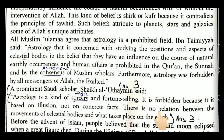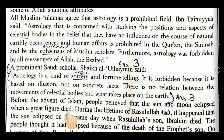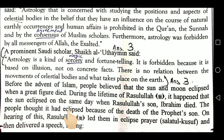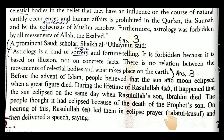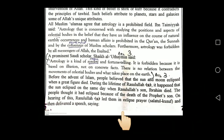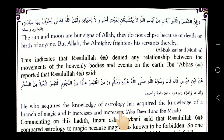There is no relation between the movements of celestial bodies and what takes place on the earth. Stars and heavenly bodies cannot do anything to anyone and are not responsible for any happening on the earth. Before the advent of Islam, Arabs believed that the sun and moon eclipsed when a great figure died. During the lifetime of the Prophet (PBUH), the sun eclipsed on the same day his son Ibrahim died, and people thought it was because of the prophet's son's death.